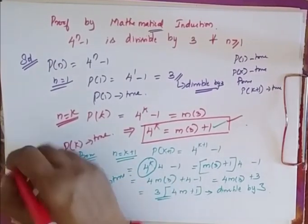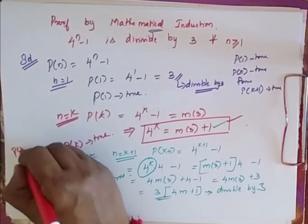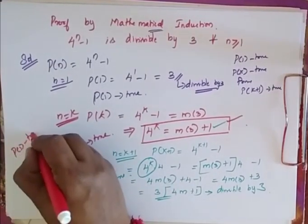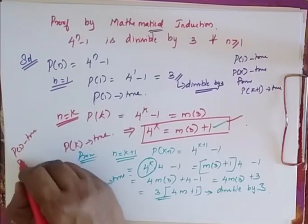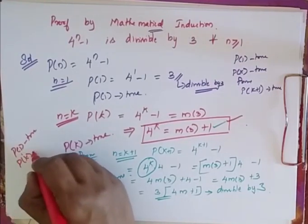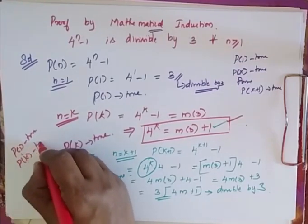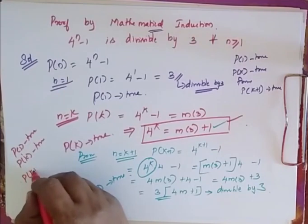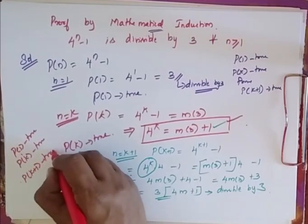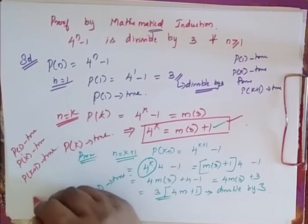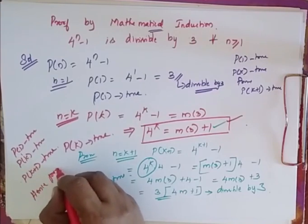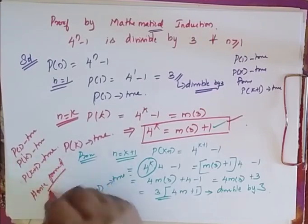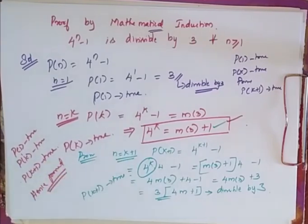So now P of 1 is true, P of K is true, and P of K plus 1 is also true. Therefore, this is true for all values of n greater than or equal to 1.